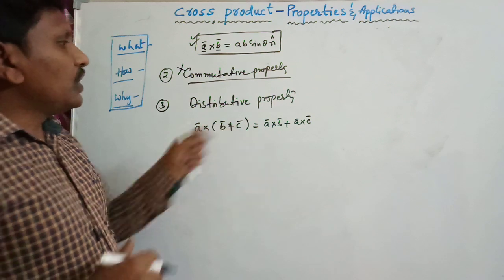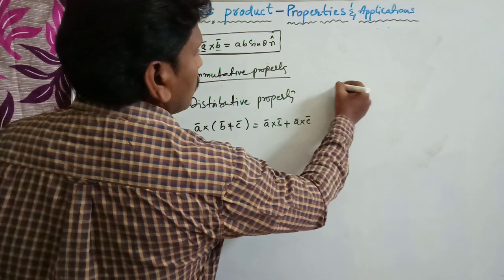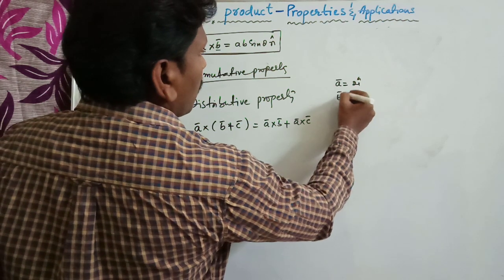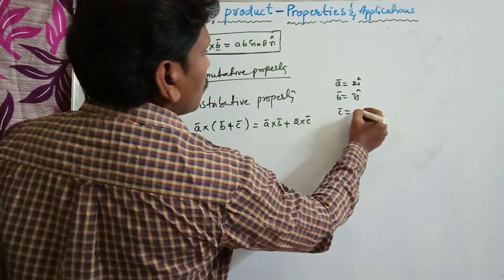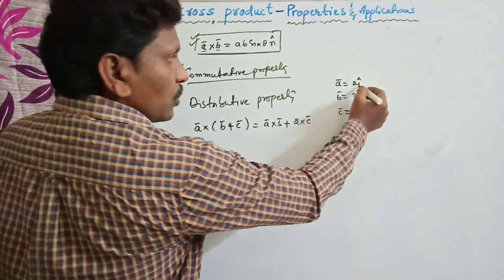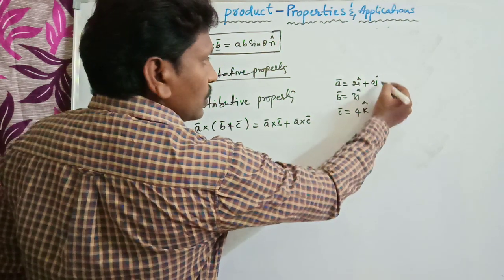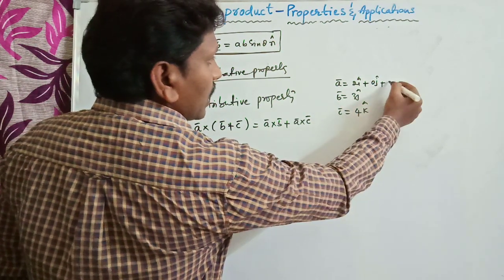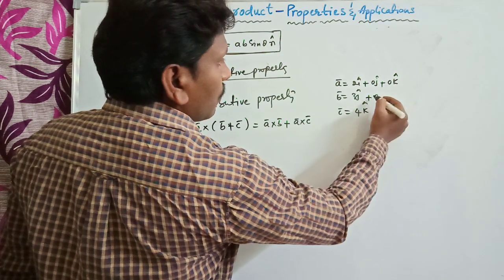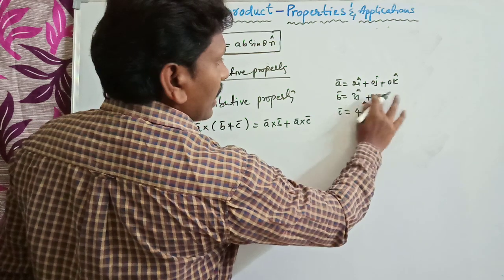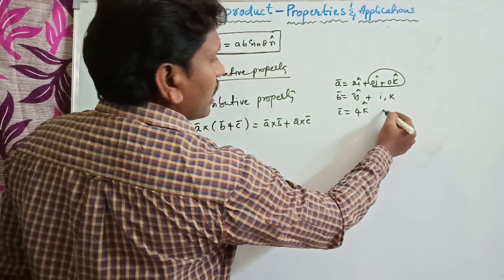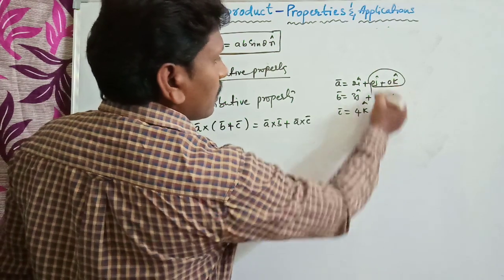To check this, let us consider: A bar = 2i cap, B bar = 3j cap, and C bar = 4k cap. Here A bar has no j or k component, B bar has no i or k component, and C bar has no i or j component. Now B bar + C bar = 3j cap + 4k cap, so A bar cross (B bar + C bar) = 2i cap cross (3j cap + 4k cap).